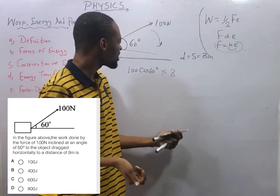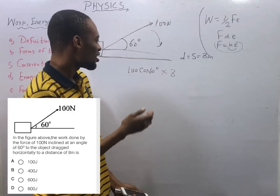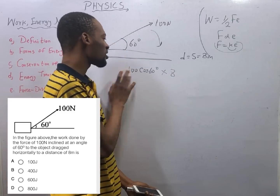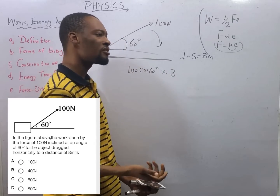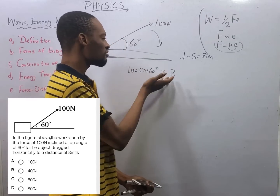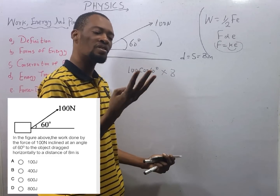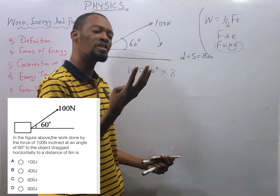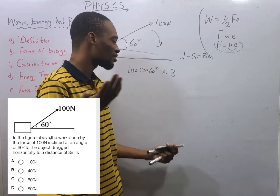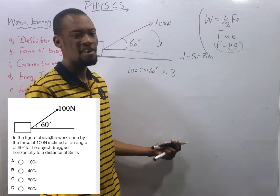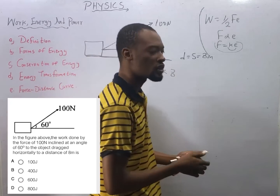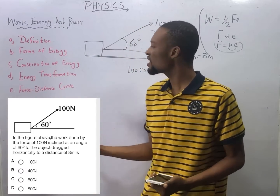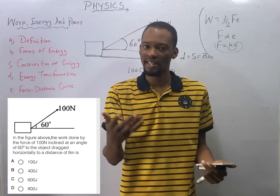cos 60° equals 1/2. So 1/2 × 100 = 50; 50 × 8 = 400 joules. Note: cos 60° equals sin 30°, both equal 1/2.